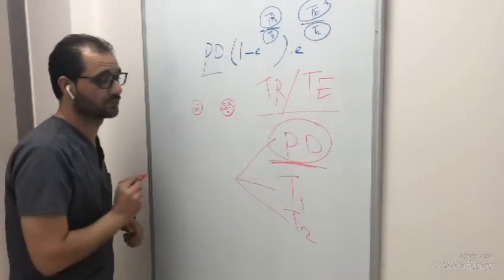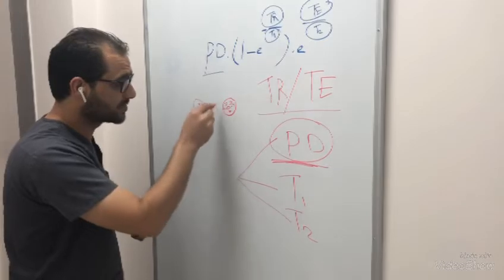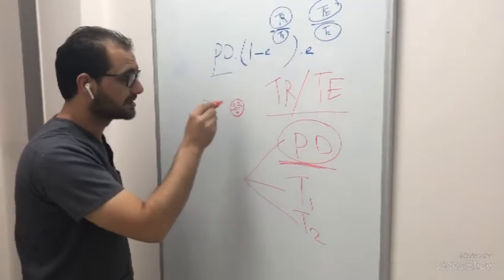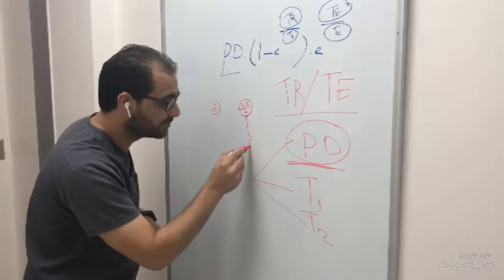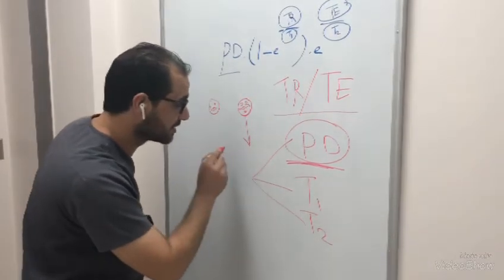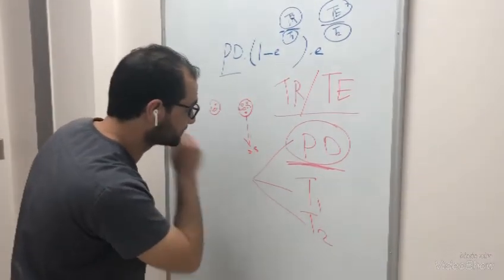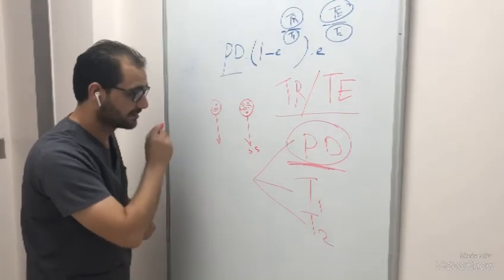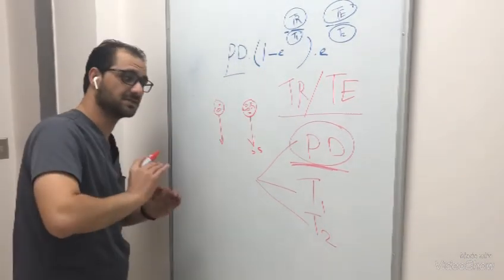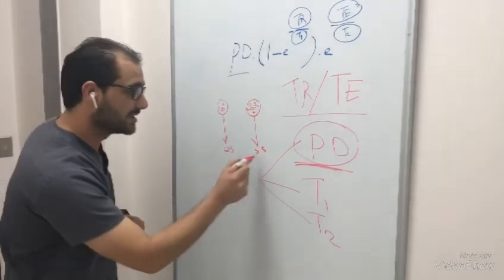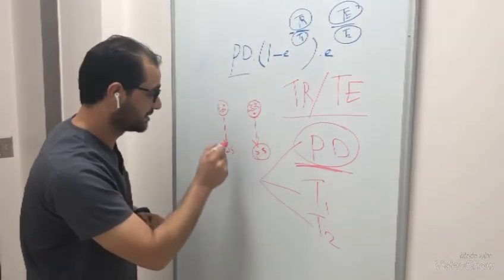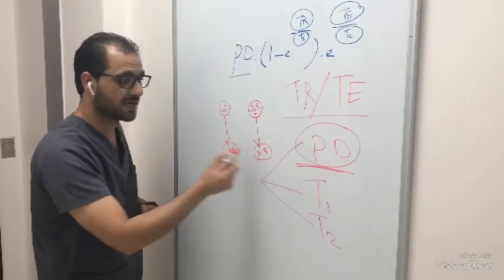If I have two tissue and this one, the number of protons more than this one, this signal will give us strong signal. And this signal, this number will give us weak signal. It means this will be bright. This will be dark. I have different.